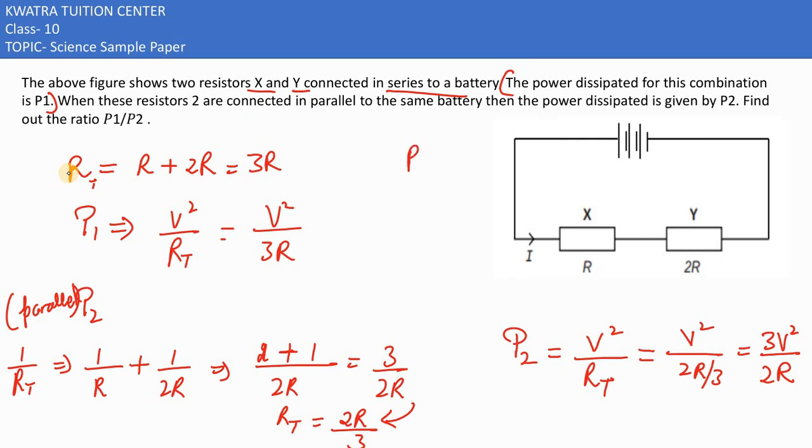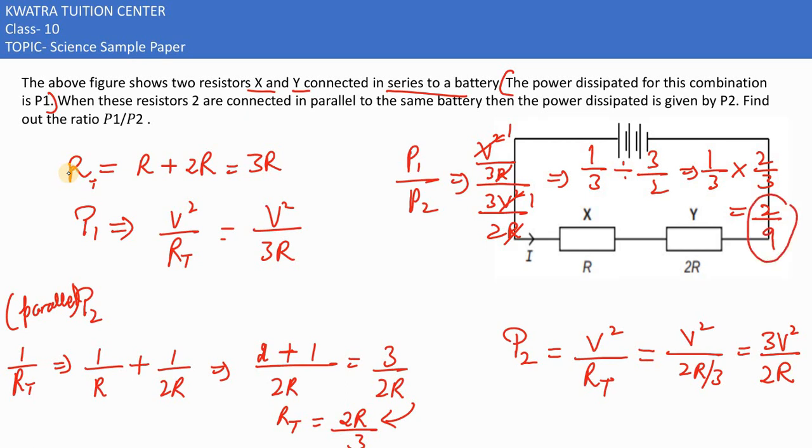We need to find the ratio P1 to P2, so I have V² over 3R and for the second one I have 3V² over 2R. R cancels with R, V² cancels with V². 1 by 3, then in division you have 3 by 2, so the value is 1 by 3 into 2 by 3, this is 2 by 9. The ratio is 2 by 9.